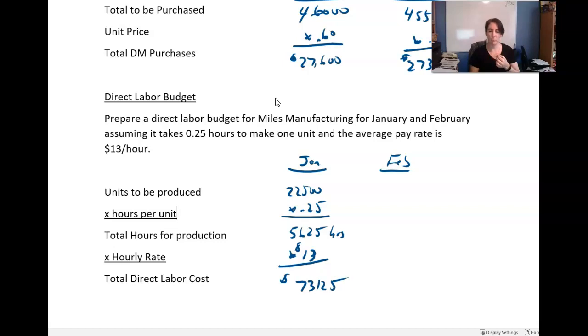We do the same thing for February. We were planning on making 22,750 units, right? That's coming right from that production budget. Again, times a quarter of an hour. Gives you 5,687.5 times the $13 an hour. And the direct labor cost is $73,937.50. Okay, so that's the end of that little example. And we'll move on to the third video in just a minute.